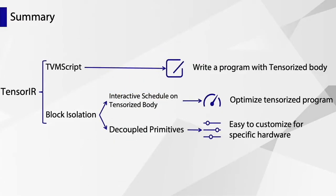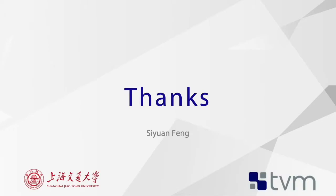In summary, TensorIR introduces two key concepts: TVMScript and block. TVMScript lets us write tensorized programs in Python syntax, while block isolations make it possible to schedule interactively and implement decoupled primitives. Together, they make it possible to optimize tensorized programs and customize for special hardware, solving the three challenges: how to write a program, how to optimize the program, and how to customize. TensorIR is the solution. Thanks everybody for listening.